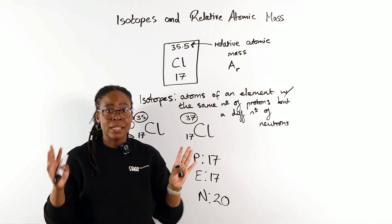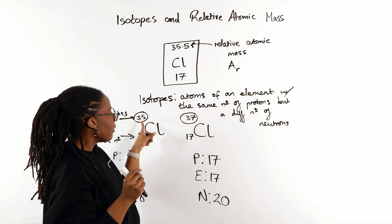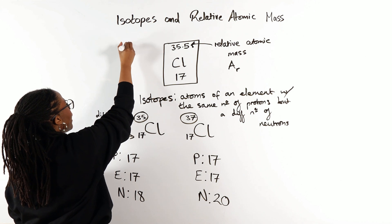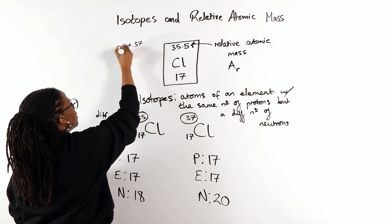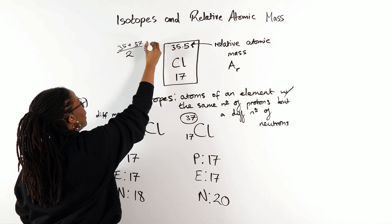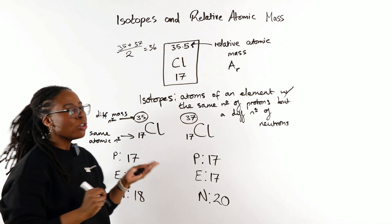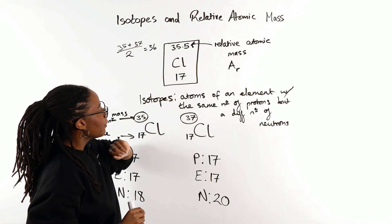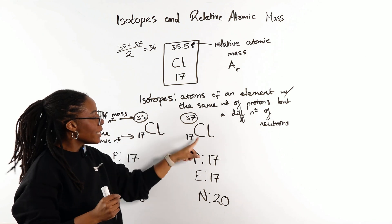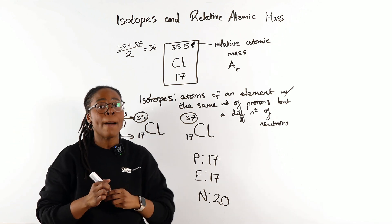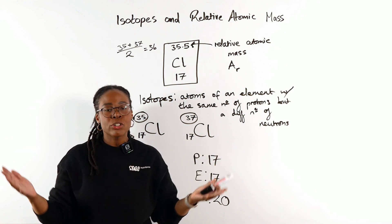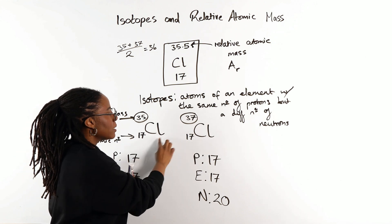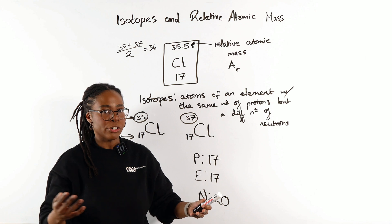With that in mind, you might be thinking, so if we're taking an average of these two values, shouldn't that give us 35 plus 37 divided by 2? Surely that would be 36 and not 35.5. But the reason that we end up with 35.5 is because these isotopes exist in different abundances. Naturally occurring, there are different amounts of each of these isotopes that occur naturally.